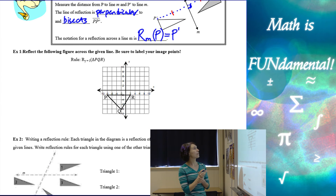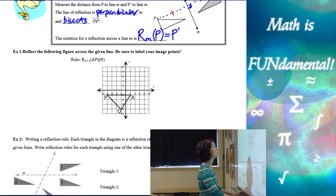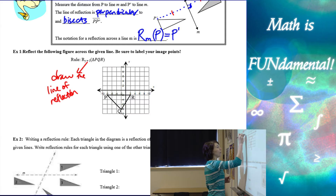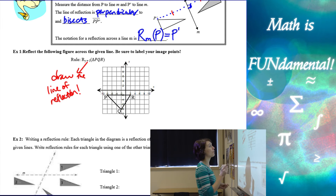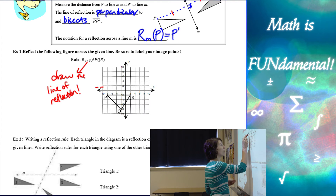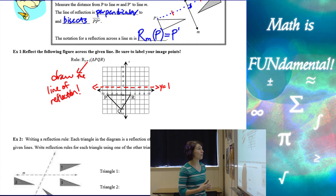Let's look at an example: reflect the following figure across the given line and be sure to label your image points. Our rule here is capital R, so that's a reflection, and Y equals 1 is our line of reflection. For the first step, draw the line of reflection — it's very important that you draw the line of reflection before doing anything else. This graph is a little tricky because the axes are scaled by 2s, but our line is Y equals 1, so we go right in the middle of those values — it's kind of like a half unit in this graph.